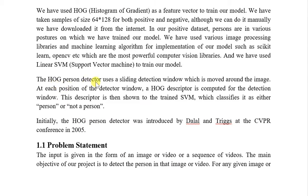The HOG person detector uses a sliding detection window which is moved around the image. At each position of the detector window, a HOG descriptor is computed for the detection window, and this descriptor is then shown to the trained SVM which classifies it as either a person or not a person. The HOG person detector was initially introduced by Dalal and Triggs at the CVPR conference in 2005.